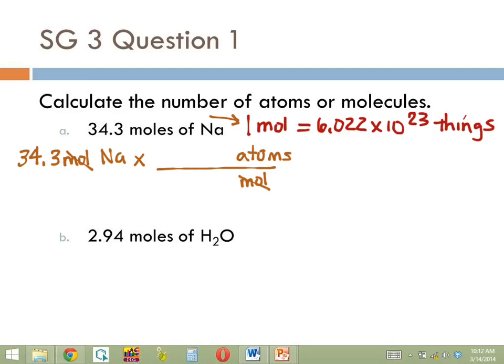One mole is that number of things. So one goes with mole and Avogadro's number goes with things.